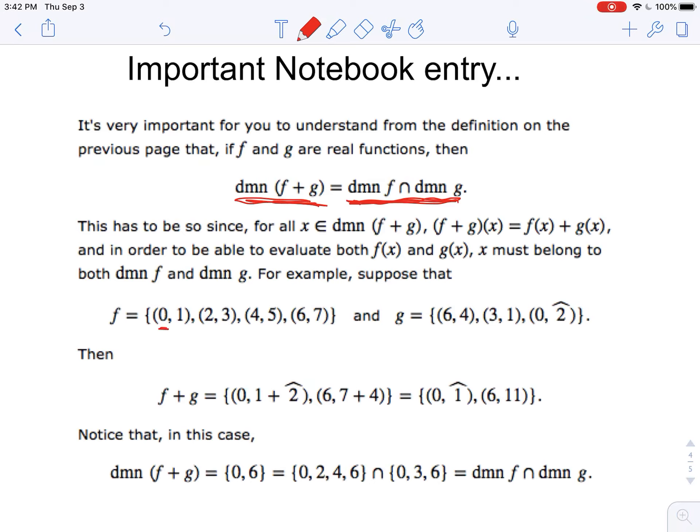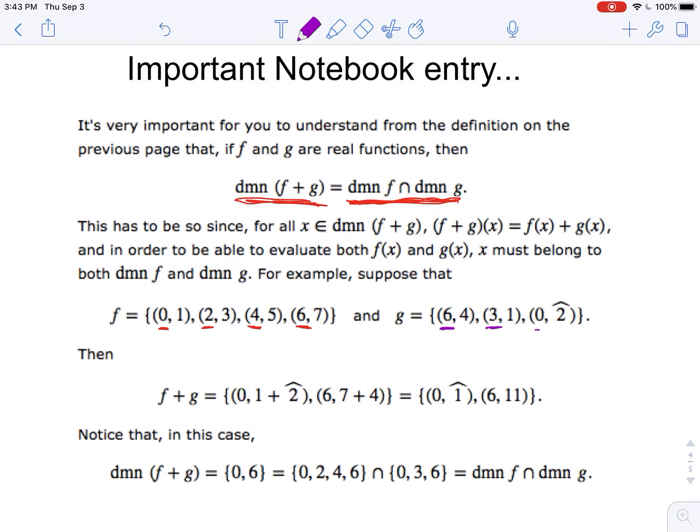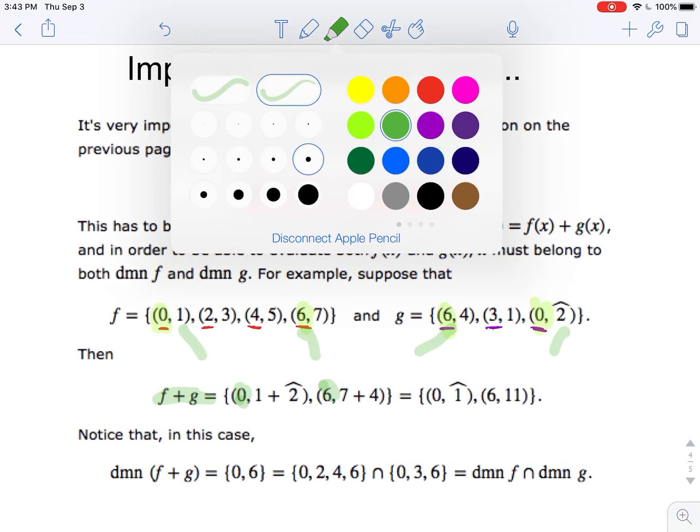Here's an especially weird one. Notice for F, I've got these ordered pairs. I'm going to underline each of the values that appear as inputs on F. It only consists of those four ordered pairs. G only consists of these three ordered pairs. I'm going to underline those. Notice that the only ones in common right now are the zeros and the sixes. So, therefore, F plus G is only going to be composed of two points. That's zero comma whatever one plus the negative two is. And the six is here as well, comma the seven plus four.